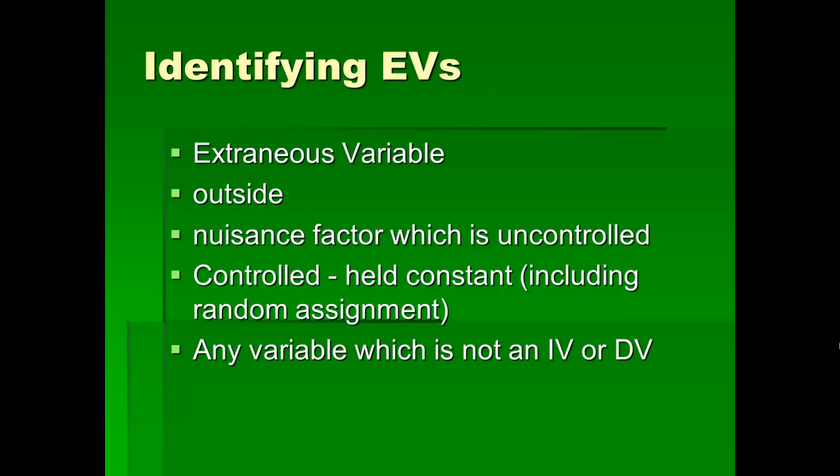So those are more or less the three major variables we'll see in an experiment. Go back to our example and try to identify the IVs, DVs, and EVs. I've already mentioned what the IV and DV are, so what would the EV — the extraneous variable — be? Do that while you switch over to the next slideshow.